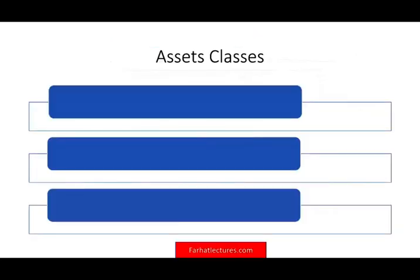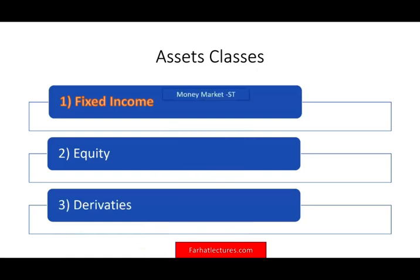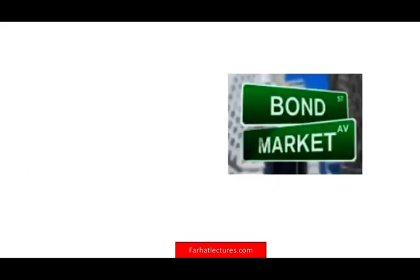We break down asset classes into three categories: fixed income, equity, and derivatives. Fixed income is broken down into two subcategories — money market or short term, and capital market, which is long term. In the prior session we covered the money market. In this session we'll cover the capital market.